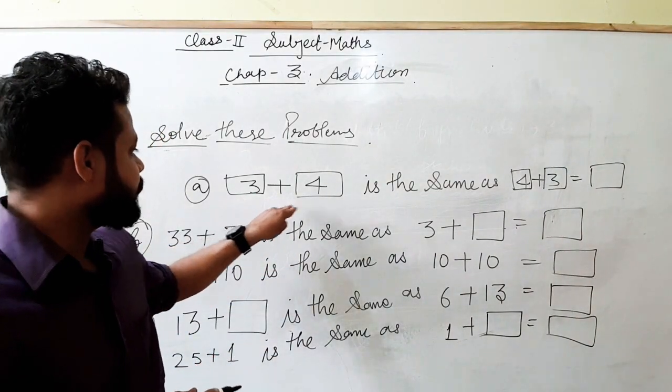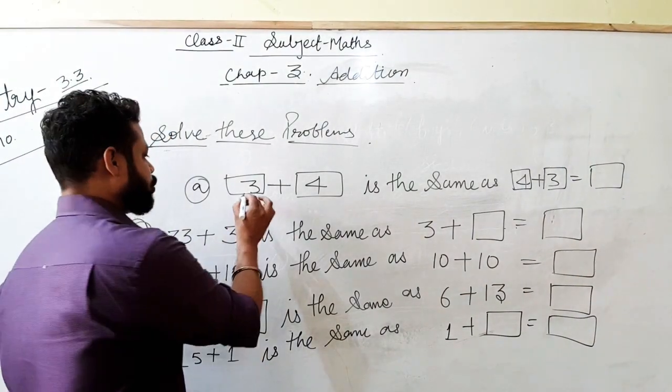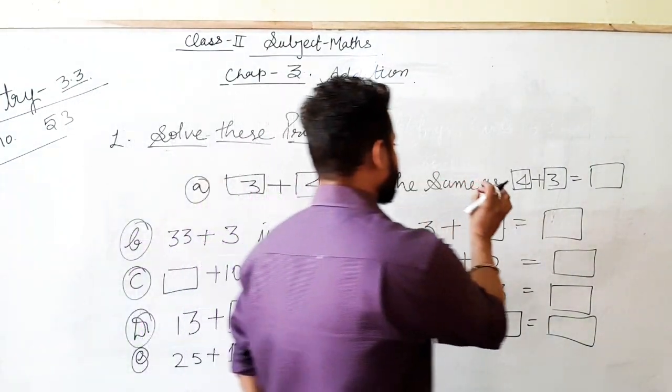3 plus 4 is the same as 4 plus 3. It means 3 plus 4 is the same 4 plus 3.